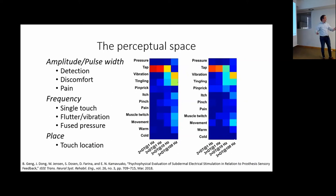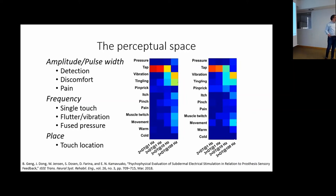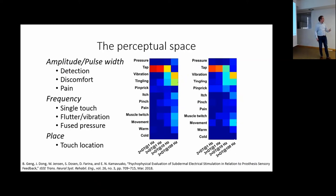Discomfort and pain are obviously things we'd like to avoid, so in most electrotactile feedback applications you work with amplitude between detection and discomfort — the comfortable range. However, if you think about electrical stimulation in virtual reality, discomfort and pain could actually be useful: if you touch a pointy object like a needle in virtual reality, we can produce a sharp pain sensation corresponding to that. So what seems like a disadvantage of electrotactile stimulation could actually be a unique feature to exploit.